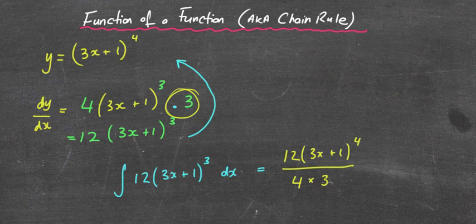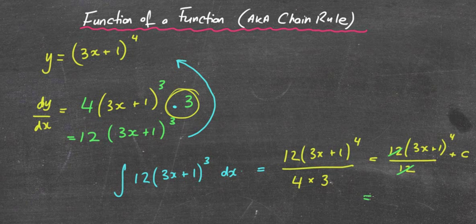In fact what we can just do is times those together. So what that will give me is this: 12 outside of 3x plus 1 to the power of 4, all over 12. Let's make sure we put that plus c in there as well, because this is an indefinite integral. Now you can see that 12s will cancel out, so I'm left with 3x plus 1 to the power of 4 plus c.